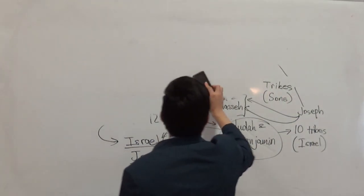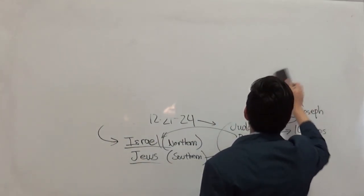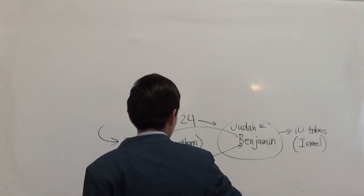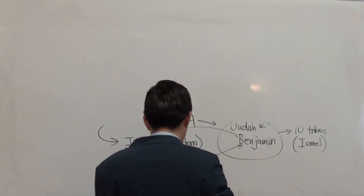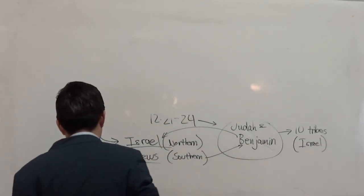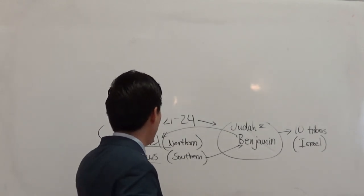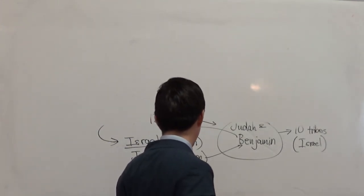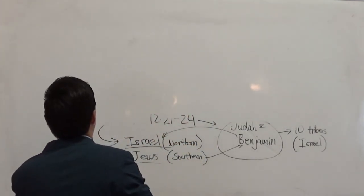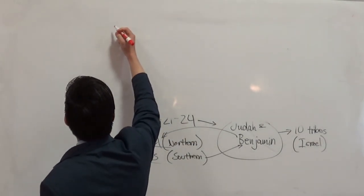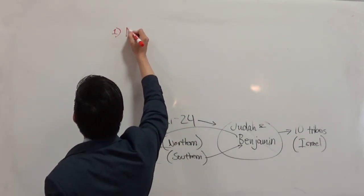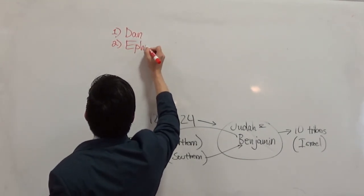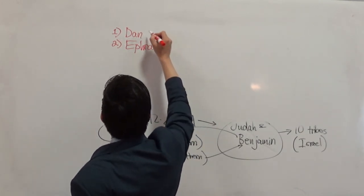Moving to Revelation chapter 7, which covers the tribulation timeline, two tribes out of the 12 were cut off by the Lord: Dan and Ephraim.